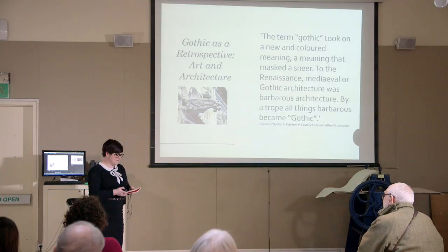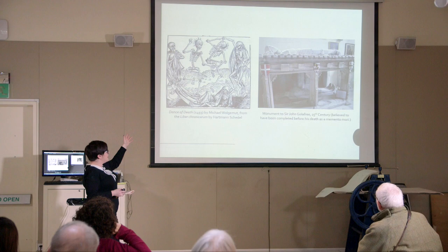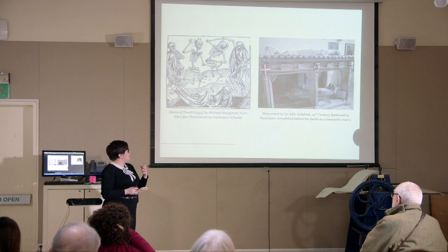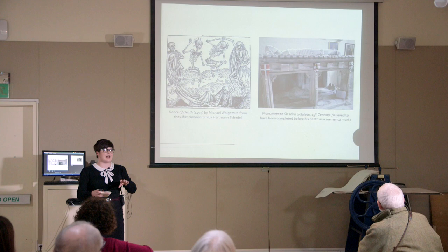This is where we start to get the death, the darkness, the skulls — the imagery that perhaps comes to mind. You've got things like the danse macabre, memento mori, the kind of things decorating crypts, those fantastic sculptures on top of burial sites. This all becomes gothic because it's part of that medieval aesthetic. You can see that this term is evolving over time.